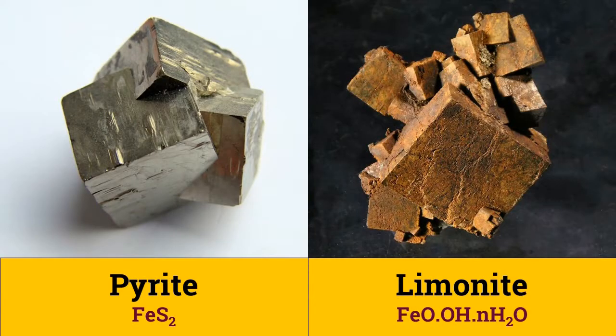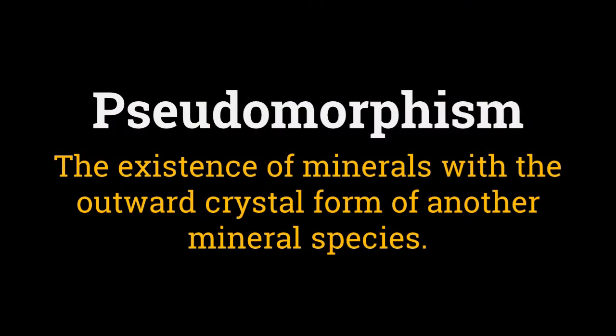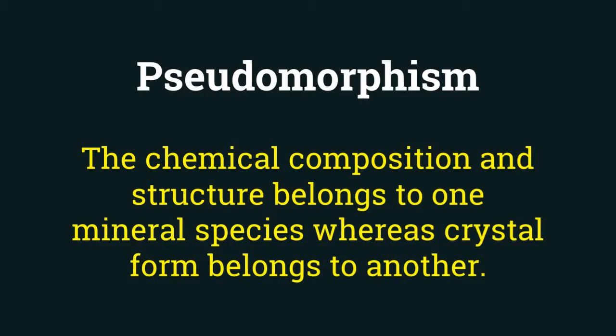We have seen that two polymorphs have the same chemical composition but different structural properties. There also exist minerals like pyrite and limonite where the chemical composition is different, yet the external form is the same. This is known as pseudomorphism. It is the process of replacement in which a mineral retains the outward crystal form of another species. This name comes from a Greek word meaning 'false form,' which aptly describes this process. In pseudomorphs, the chemical composition and structure belongs to one mineral species, whereas the crystal form belongs to another.